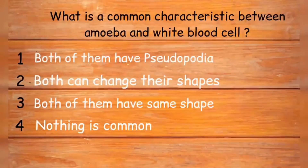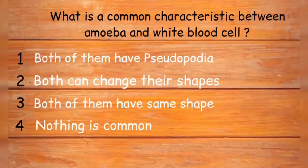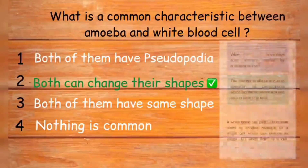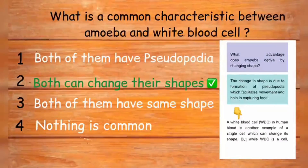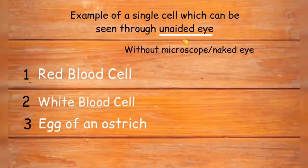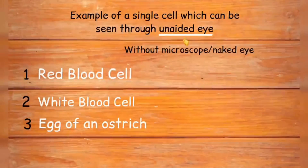What is a common characteristic between amoeba and white blood cells? Both have pseudopodia, both can change their shapes, both have the same shape, or nothing is common. Amoeba has the ability to change its shape due to the formation of pseudopodia, and this ability is also possessed by white blood cells. This characteristic is common in both. Give an example of a single cell which can be seen through the unaided eye. Options are red blood cell, white blood cell, or egg of an ostrich.